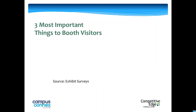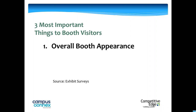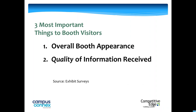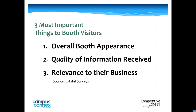So when it comes to a booth, according to exhibit surveys research, the three things most important to booth visitors: number one is the appearance of the booth; number two is the quality of the information they receive as a result of stopping at the booth; and number three is the relevance of that information to their business. So it's about a good-looking booth that delivers quality information relevant to their job, their business, their career.